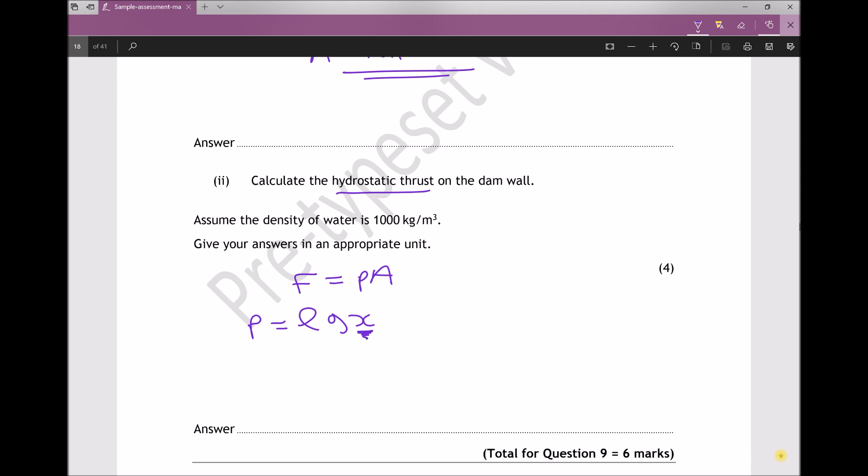So if we write this as a complete equation, what we'll get is the force is the pressure times the area, where the pressure is rho g x, and we're going to multiply that by the area. So if we input our numbers, we've got 1000 times 9.81 times the distance 5 meters. That's going to give us the average pressure, and we're multiplying that by the area that we previously calculated as 50.